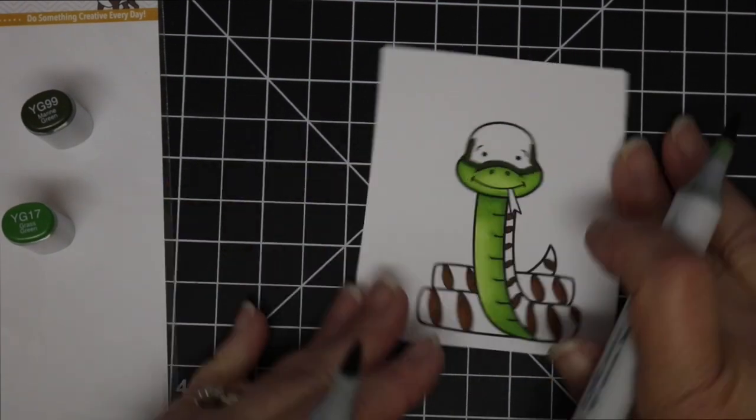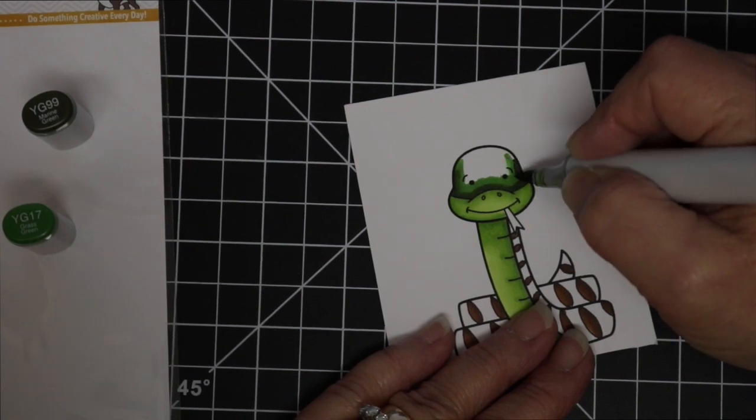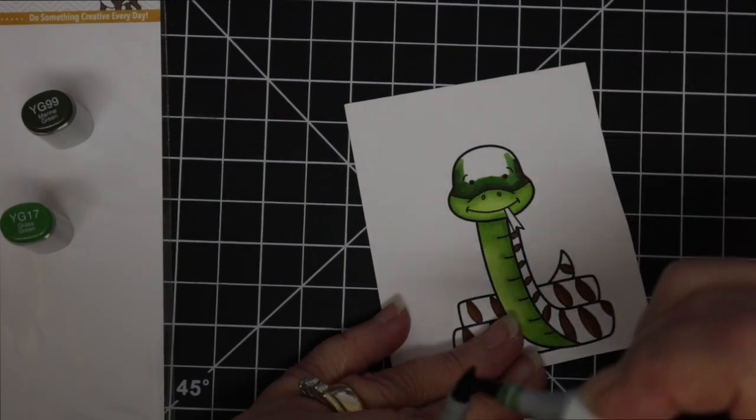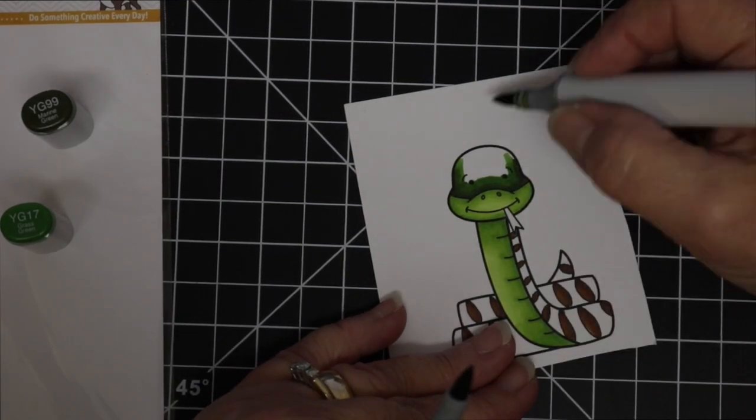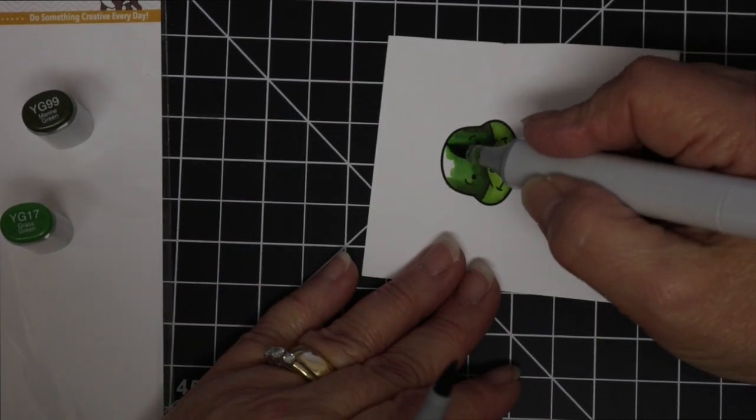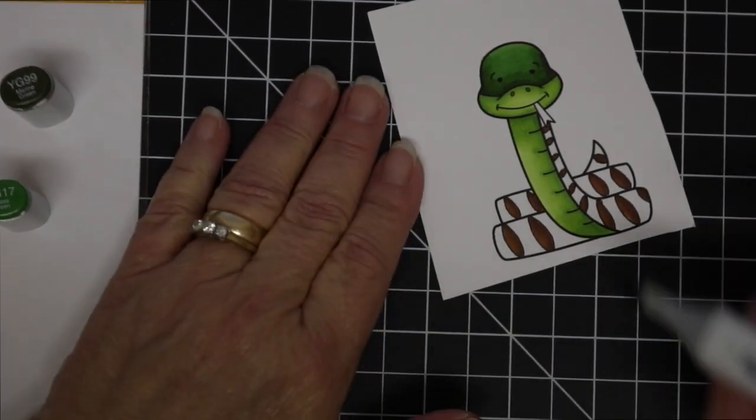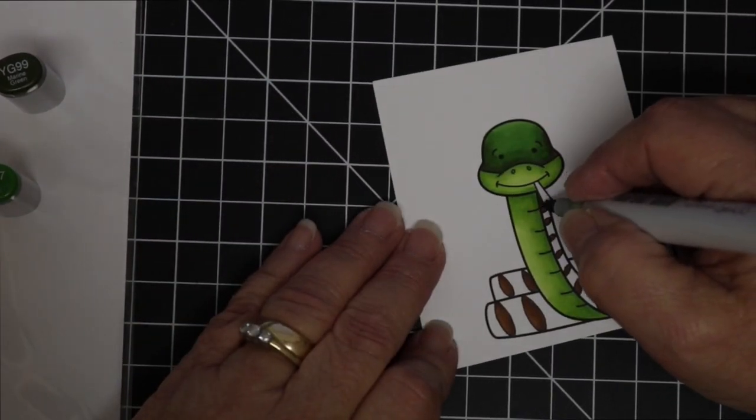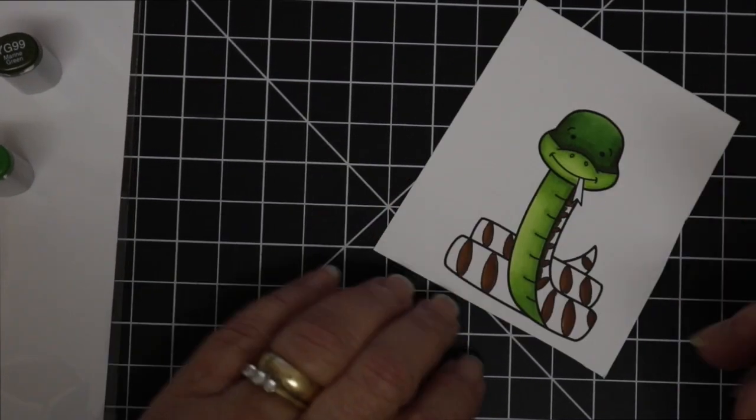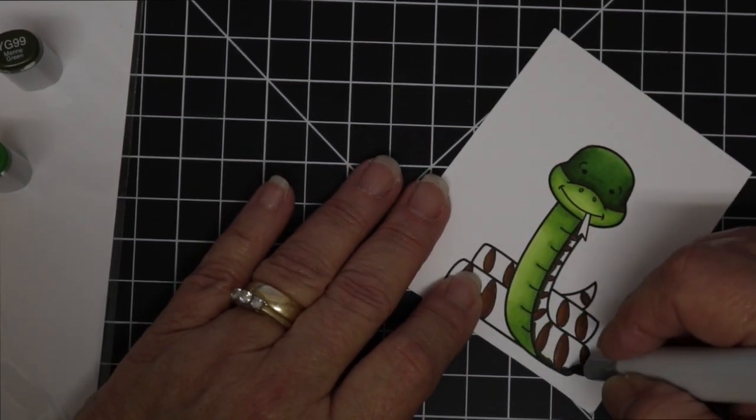Now you will notice that these two colors are pretty far apart as far as Copic blending but you can use the tip-to-tip technique and the lighter YG17 kind of brightens up that dull looking YG99. Don't be afraid to grab your markers that are pretty far apart in numbers and try them out. You just never know the result that you're going to get until you give it a try.